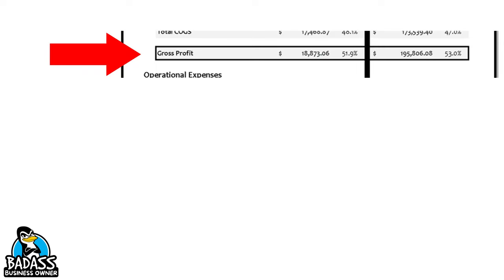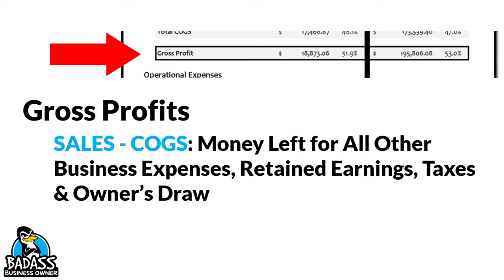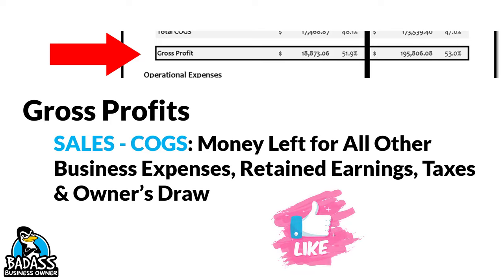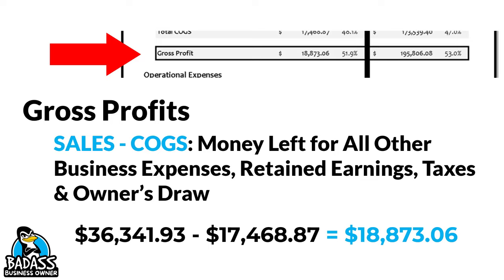The third section is a little line that says gross profit. Your gross profit is basically your sales minus your cost of goods — it's the money that's left over for all other business expenses, retained earnings, taxes, and owner's draw. So you just take your sales minus those cost of goods and that tells you what your gross profits are. In this particular P&L example, it's $36,000 in sales, cost of goods were $17,000, which means their gross profit is $18,873. That's basically how the gross profit line works.